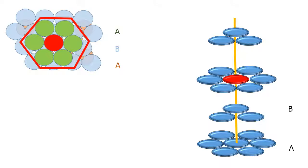When I place the third layer, I see that the structure is similar to that of the first layer — that is, the A layer — because I am getting 7 spheres inside the hexagon. If I keep on placing the fourth layer, the arrangement would be repeated. And therefore this arrangement would be called an AB-AB type of arrangement.